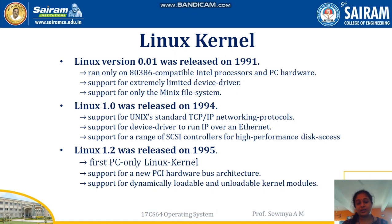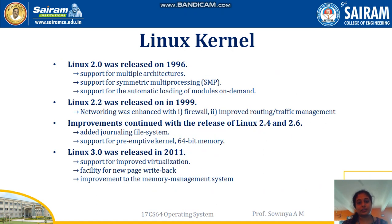Linux 1.2 was released in 1995, adding support for new PCI hardware bus architecture and dynamically loadable and unloadable kernel modules. Linux 2.0 was released in 1996, supporting multiple architectures and symmetric multiprocessing. Linux 2.2 was released in 1999, adding support for network firewalls, routers, and traffic management. Improvements continued with Linux 2.4 and 2.6, adding file system support, preemptive kernels, and 64-bit memory.